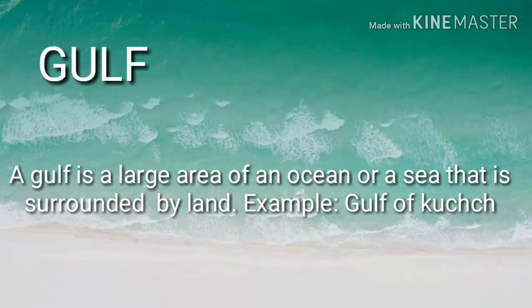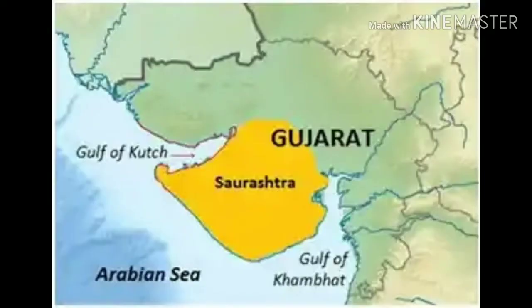Gulf: A gulf is a large area of an ocean or a sea that is surrounded by land. For example, the Gulf of Kutch. The map shown here highlights the Gulf of Kutch.